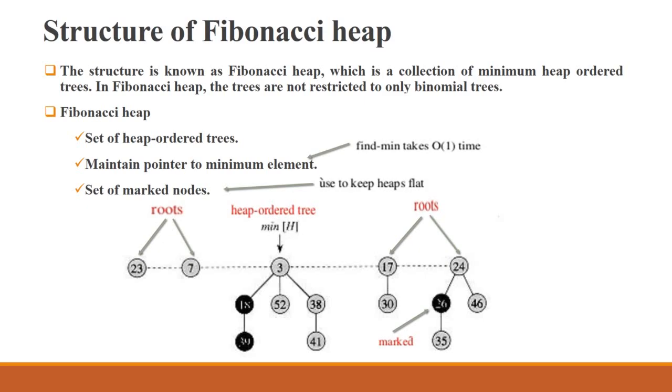In Fibonacci heap, the trees are not restricted to only binomial trees. When we use binomial heap, there is restriction: B2 means four nodes, B1 means two nodes, B3 equals to eight nodes.